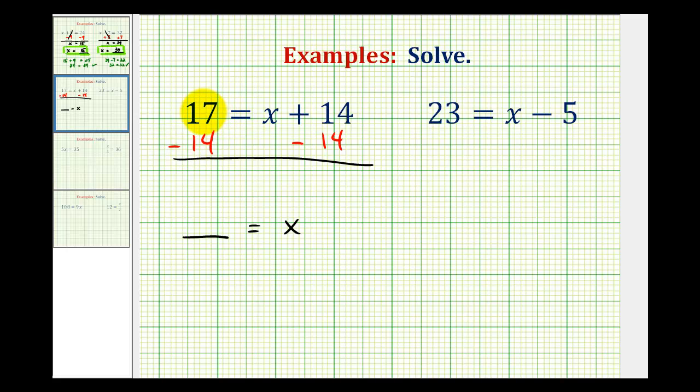On the left side we have 17 - 14, which equals 3. We bring down the equal sign. On the right side, +14 - 14 equals 0, so we're left with just x on the right side of the equation.